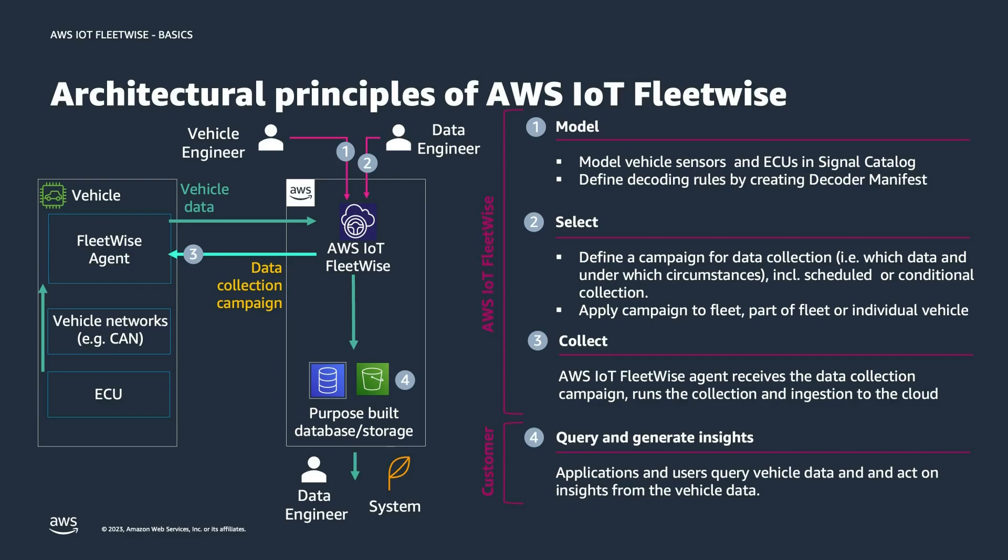We're modeling all the vehicle sensors as well as the ECUs in the vehicle catalog. You can imagine the signal catalog containing all the signals for all the vehicles in your fleet. The second part is defining decoding rules in the decoder manifest — this very much depends on the CAN-DBC file, which contains information to decode the messages communicated over the CAN bus. The next step is selecting the right data, taken over by the data engineer, who defines collection campaigns — which kind of data and under which circumstances you are interested in.